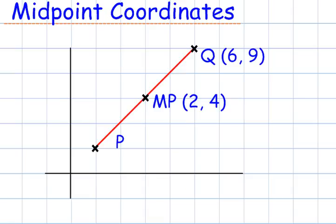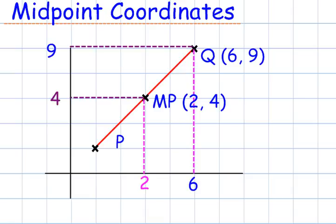So, looking at the x and y-coordinates of 2 and 6, and 4 and 9. Let's look at the x-coordinates first. So, from 6 to 2, I go down 4. Because 2 is in the middle, it will be 4 either side, and so it will go down to minus 2.